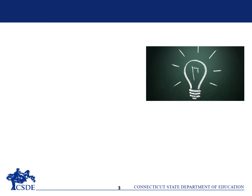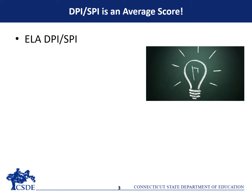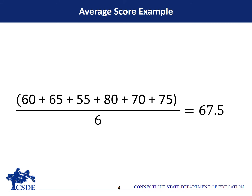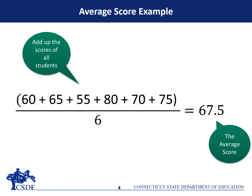The simplest way to think of the DPI or SPI is that it's the average score of students in a subject area, whether it's English language arts, mathematics, or science. To get an average score, you add up the scores of all the students and then divide by the number of students.